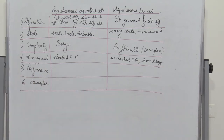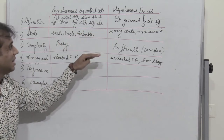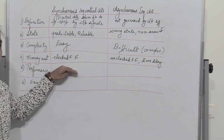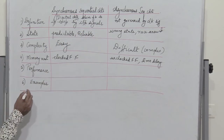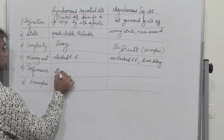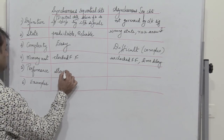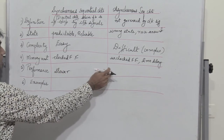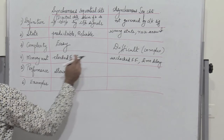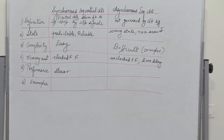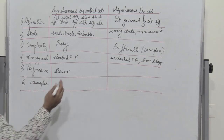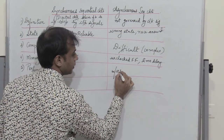Now talking about performance. In synchronous sequential circuits, due to the propagation delay of all the clocked signals reaching all the circuit elements, they are pretty slow. Therefore synchronous sequential circuits are slower in performance. In case of asynchronous sequential circuits, there is no clocked signal delay and therefore they are much faster.